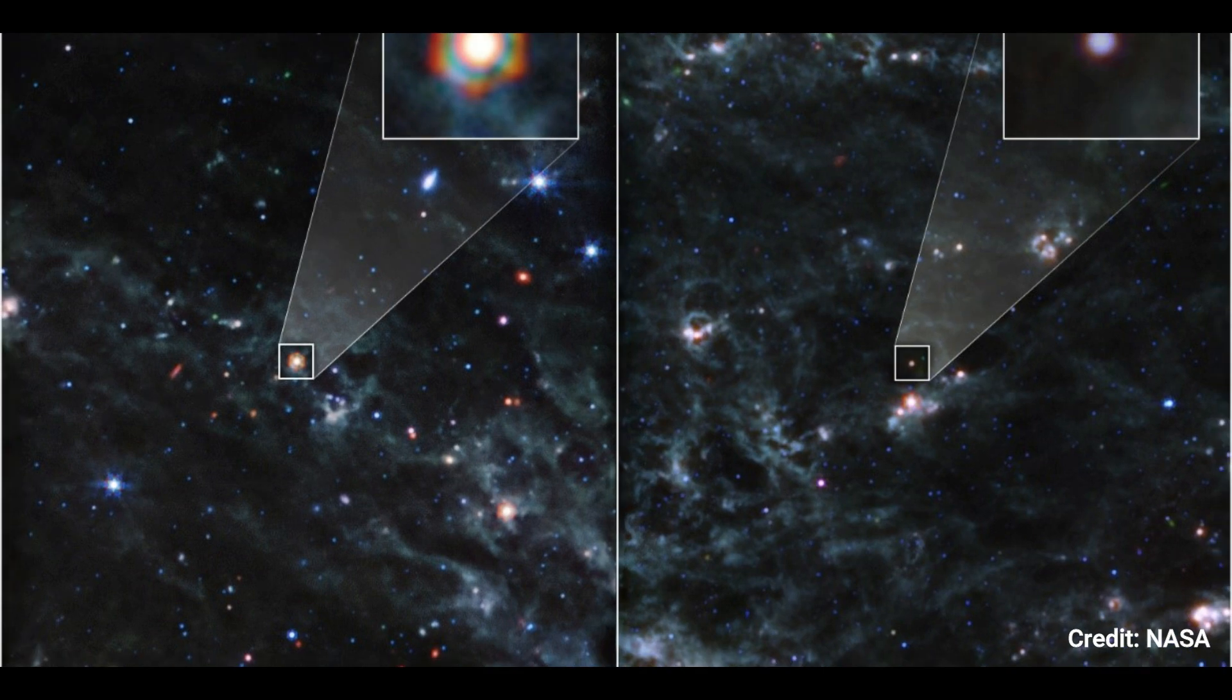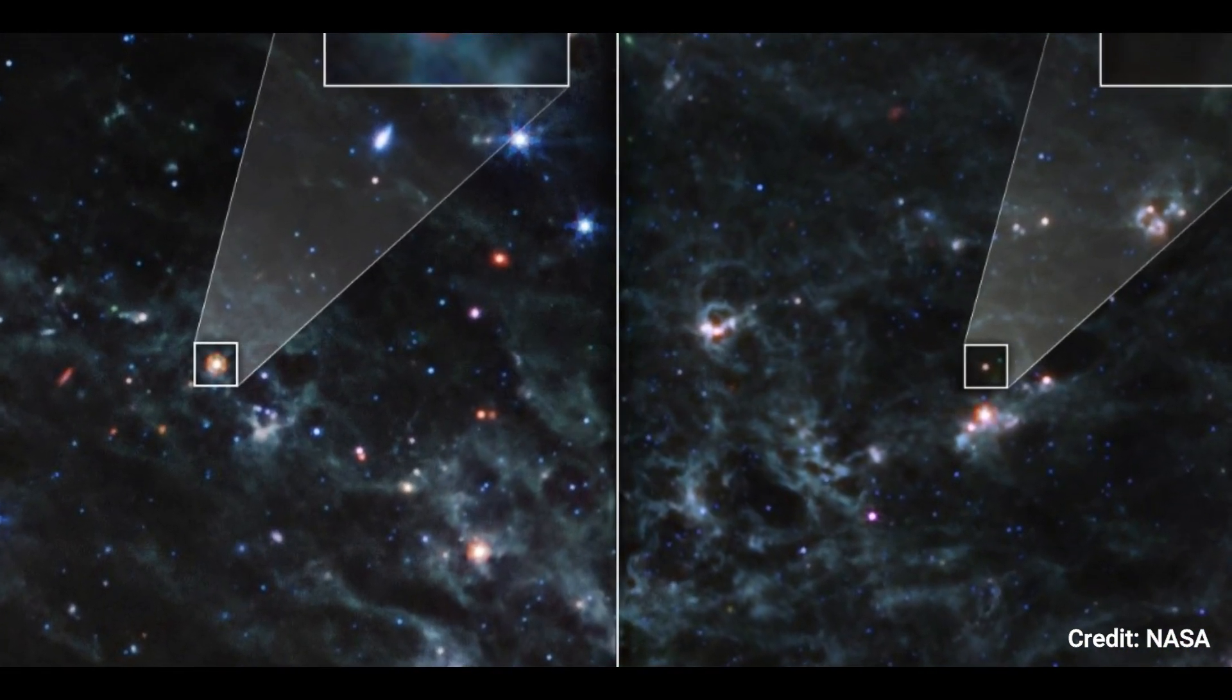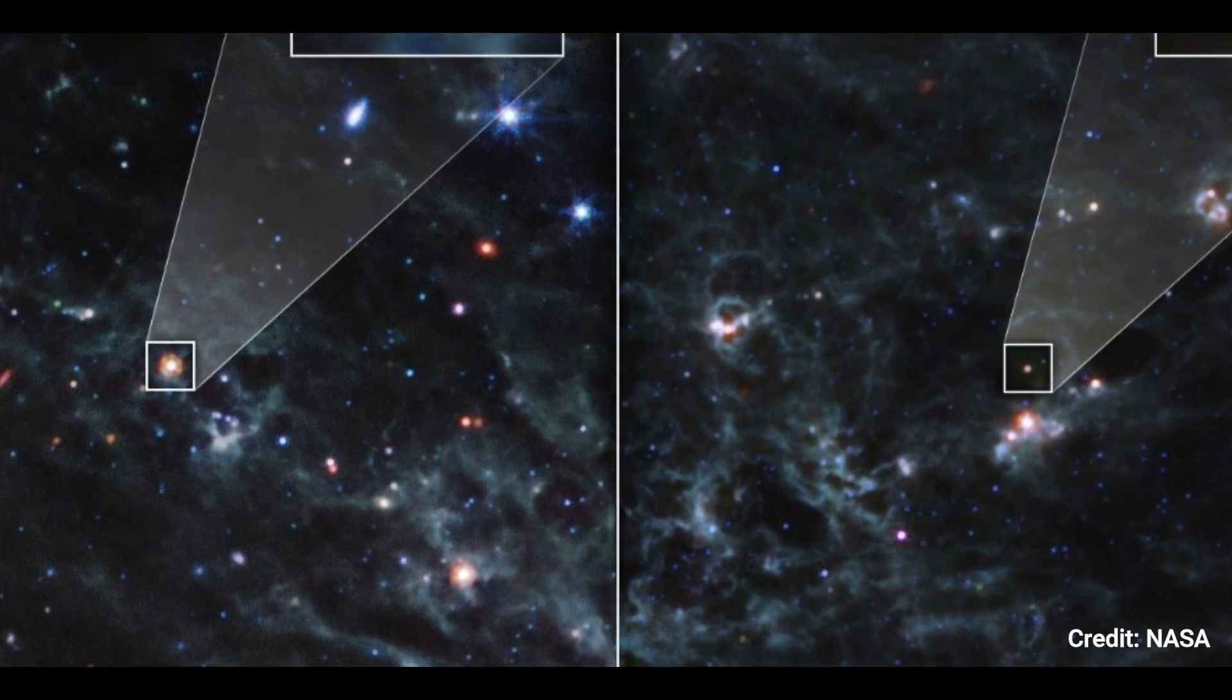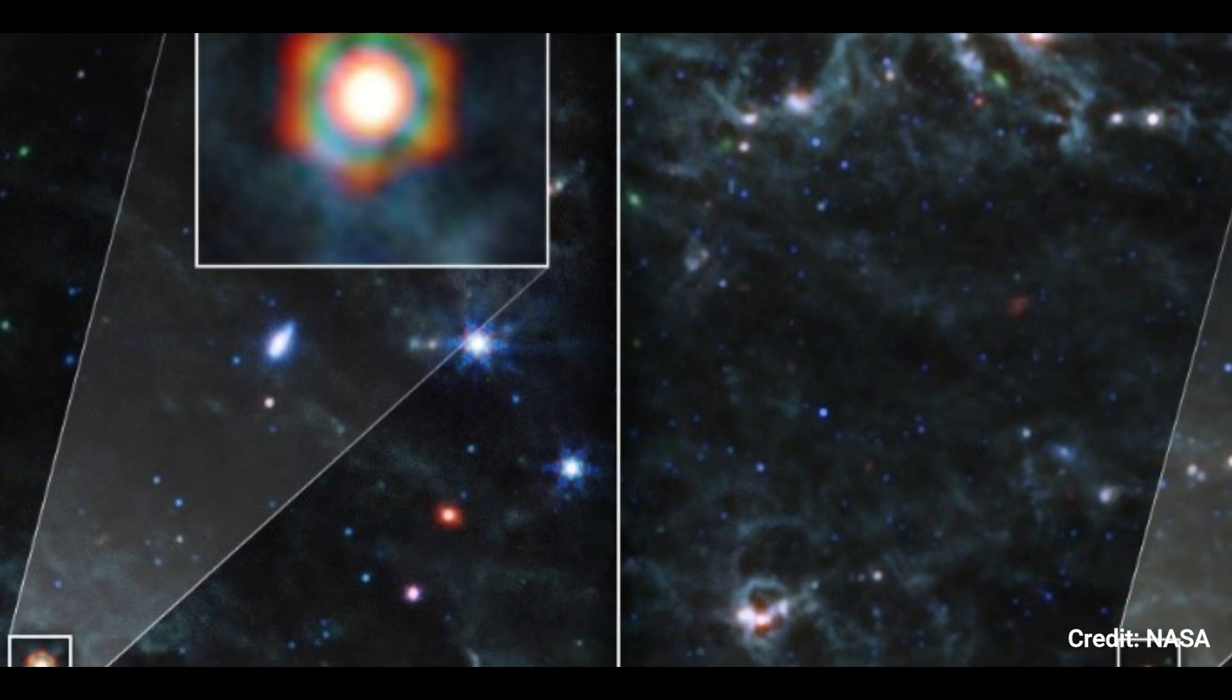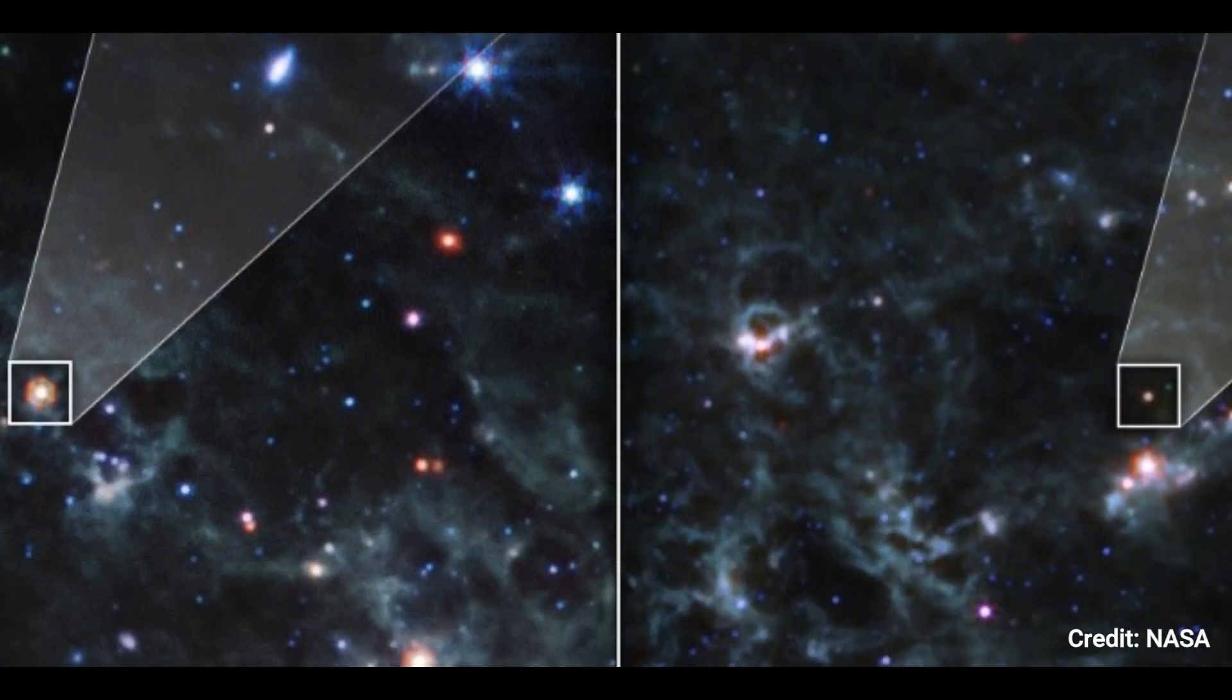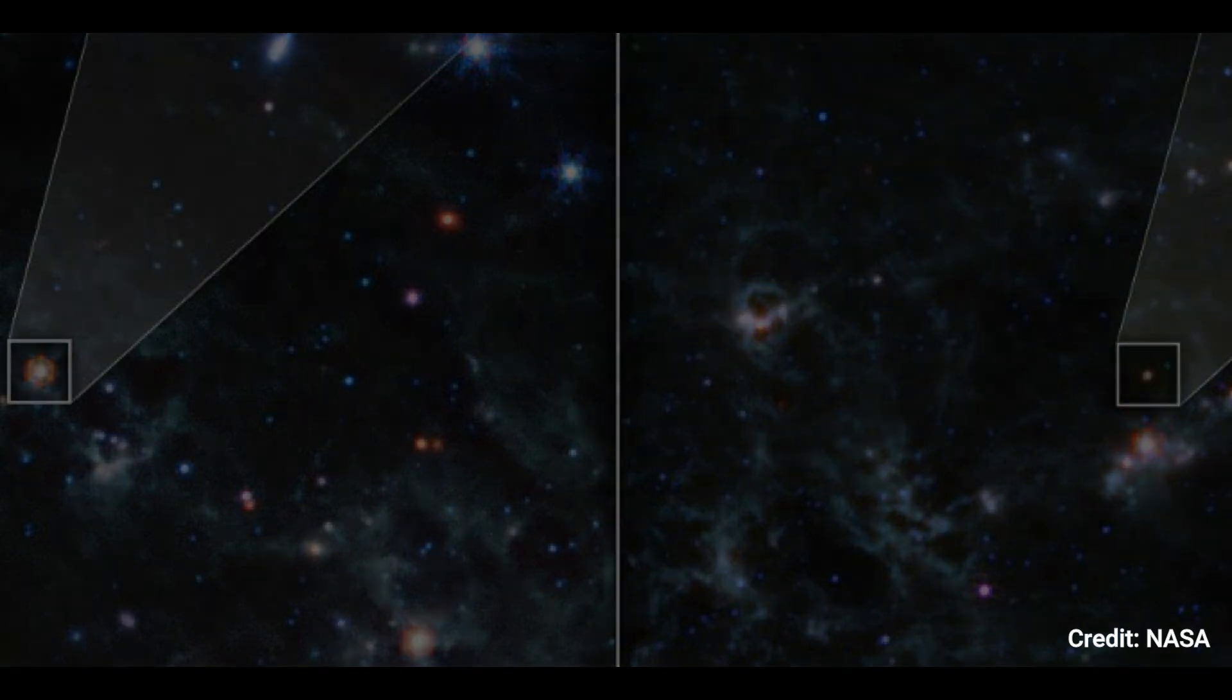The hexagonal structure of SN 2004ET in Webb's image is a result of the telescope's mirror and struts interacting with the intense light of a point source, causing diffraction spikes. The latest Webb discovery is the first major breakthrough in the study of supernova dust formation since the discovery of newly generated material in the relatively nearby supernova 1987A.